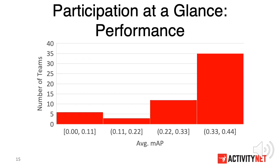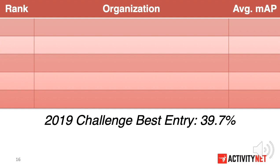Taking a glance at the overall performance of all teams, this bar figure shows the distribution of the best submissions from each of them. Most teams reached over 33% average MAP before the server closed. In our workshop in 2019, we reported the best entry at 39.7%. Impressively, this year all 5 teams surpassed last year's best results. Now I am going to announce the top 5 teams on the ActivityNet Action Localization task for this year.